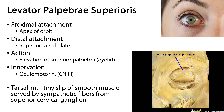Let's start with levator palpebrae superioris, which is the odd duck in that it's the only extraocular muscle which does not attach to the sclera. It runs from the apex of the orbit down to the superior tarsal plate. When activated, it elevates the upper eyelid. It's innervated by the oculomotor nerve.